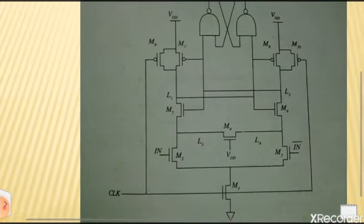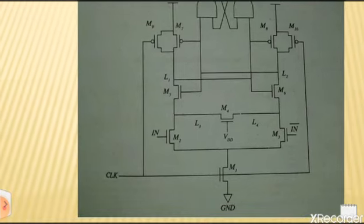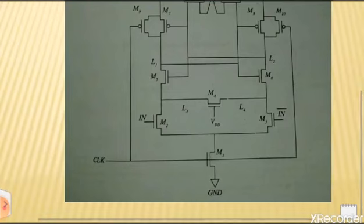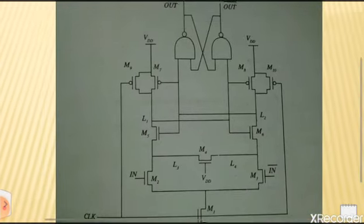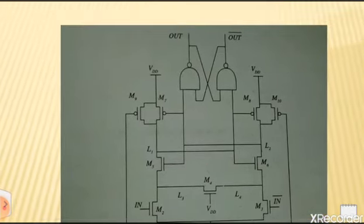The evaluate transistor turns on and the differential input pair M2 and M3 is enabled. The difference between the input signals is amplified on the output nodes L1 and L2. The cross-coupled inverter pair flips to one of its stable states based on the value of the inputs.